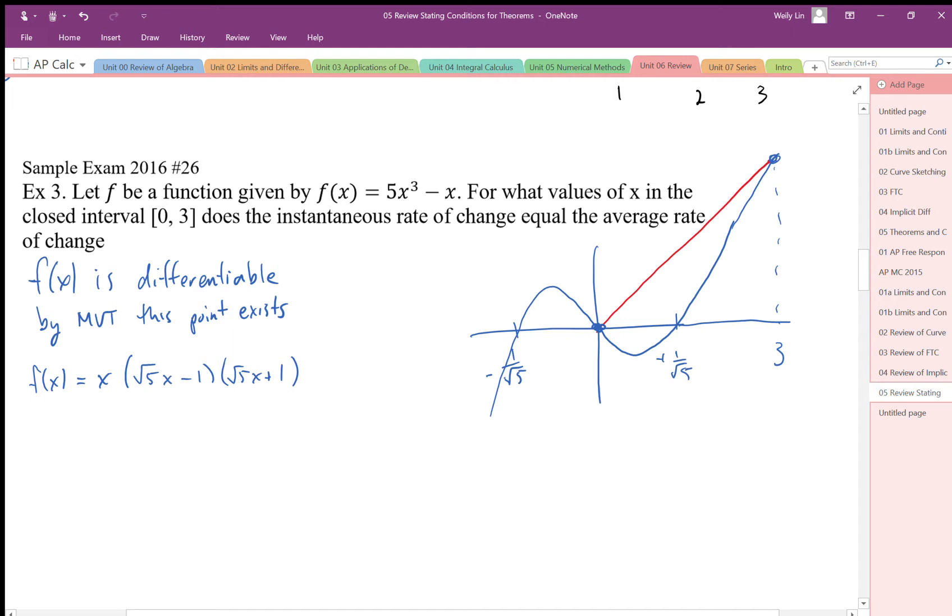We want to find out where the slope of this... I'm going to calculate the slope here. This is 3 and that's going to be 3 times 3 cubed times 5 which is going to be 135 minus 3, so 132.